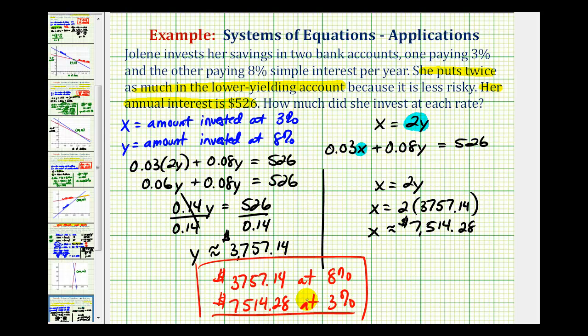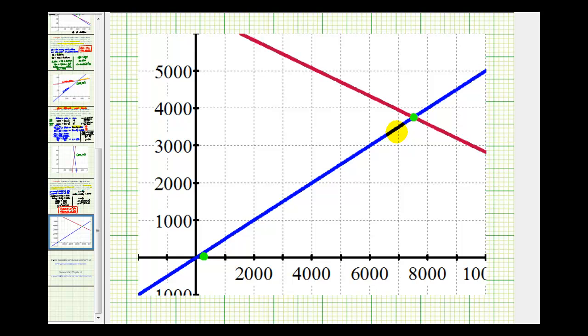Now just to verify the solution, we could graph both equations on the same coordinate plane and the point of intersection will represent our solution. Let's take a look at the graph of these two equations. Here's our point of intersection. Notice that the x coordinate, or the amount of money invested at 3%, looks like it is approximately 7,514.28.